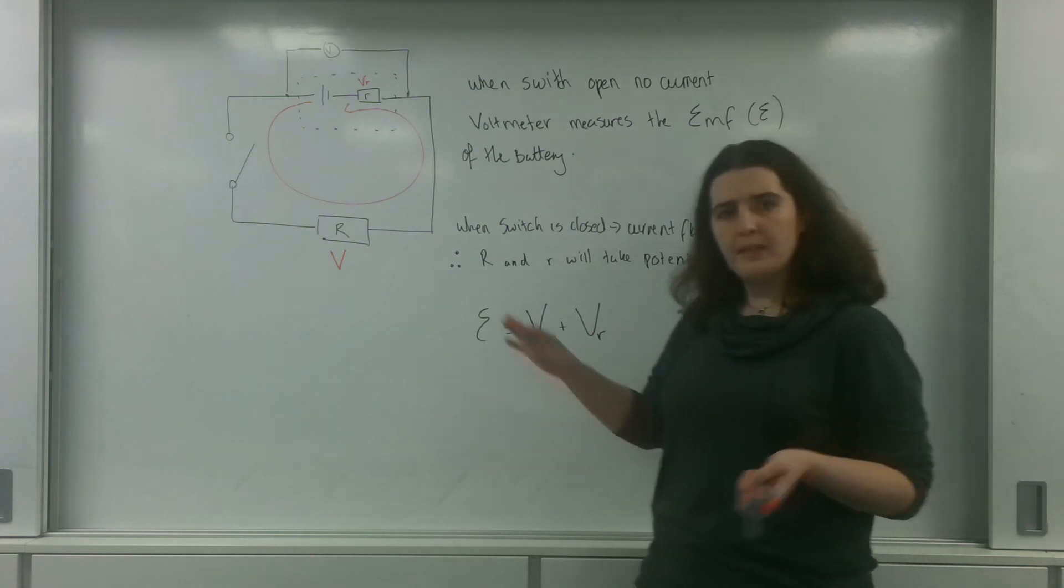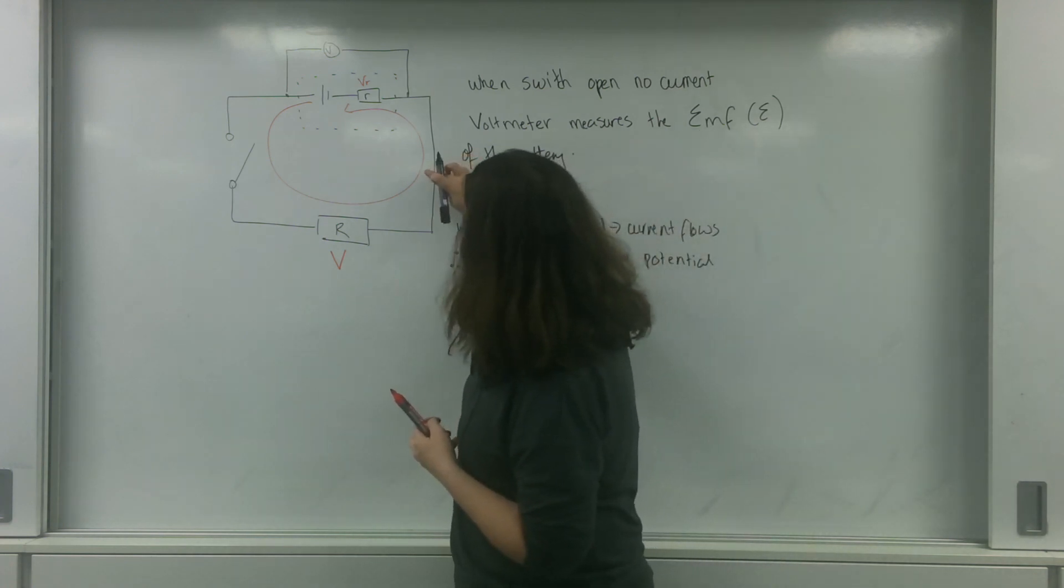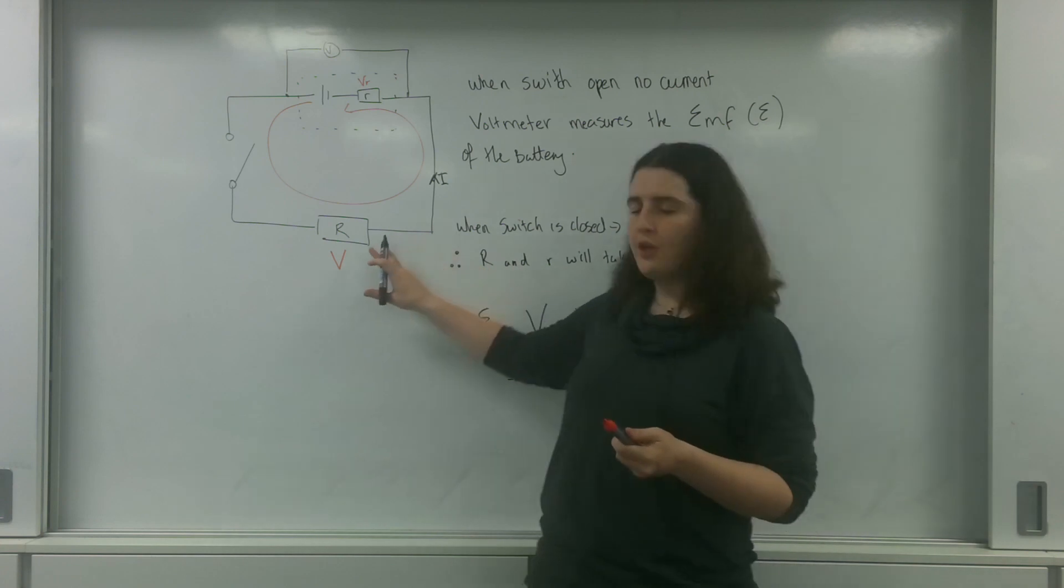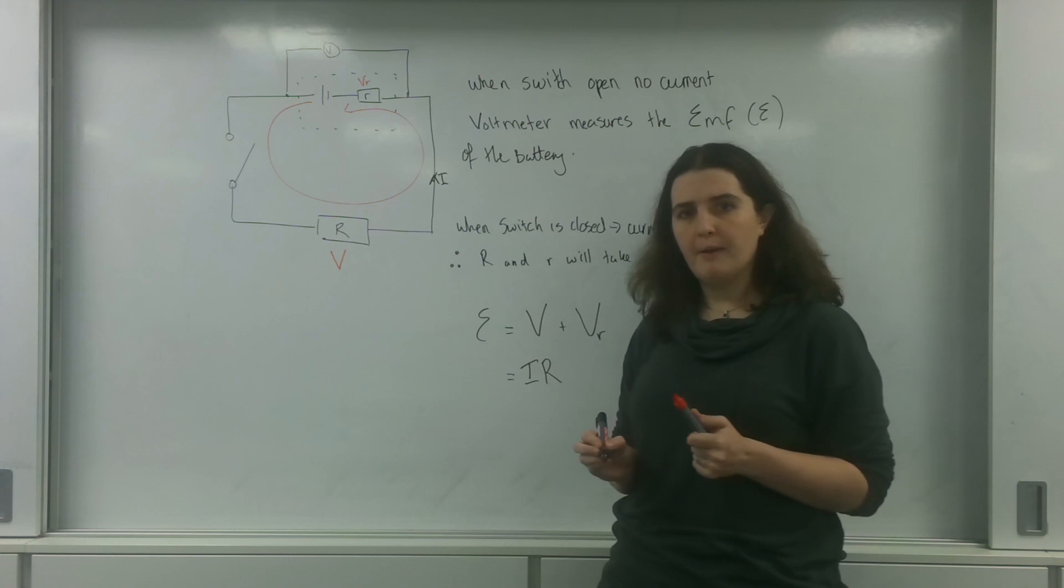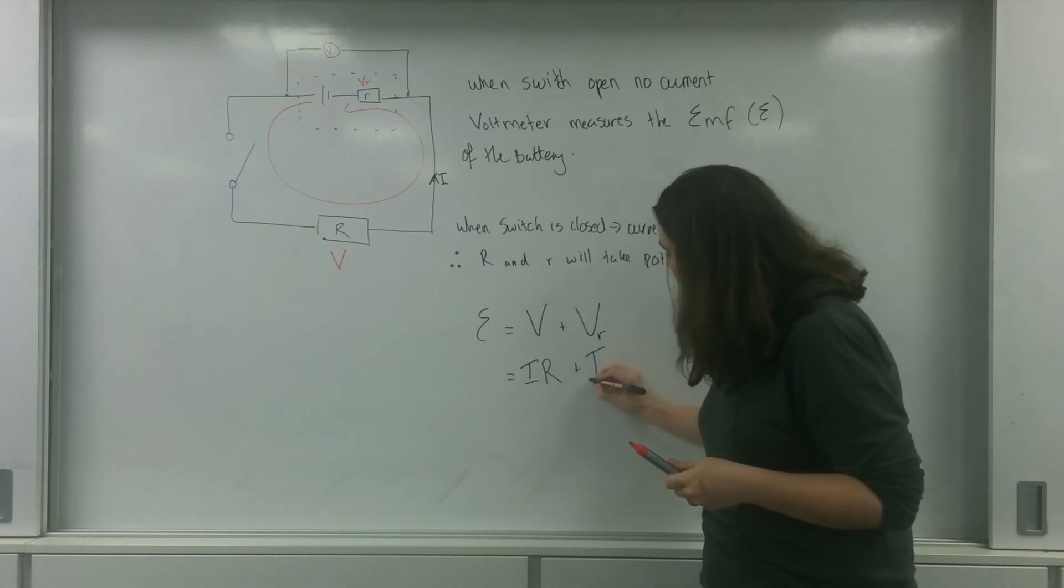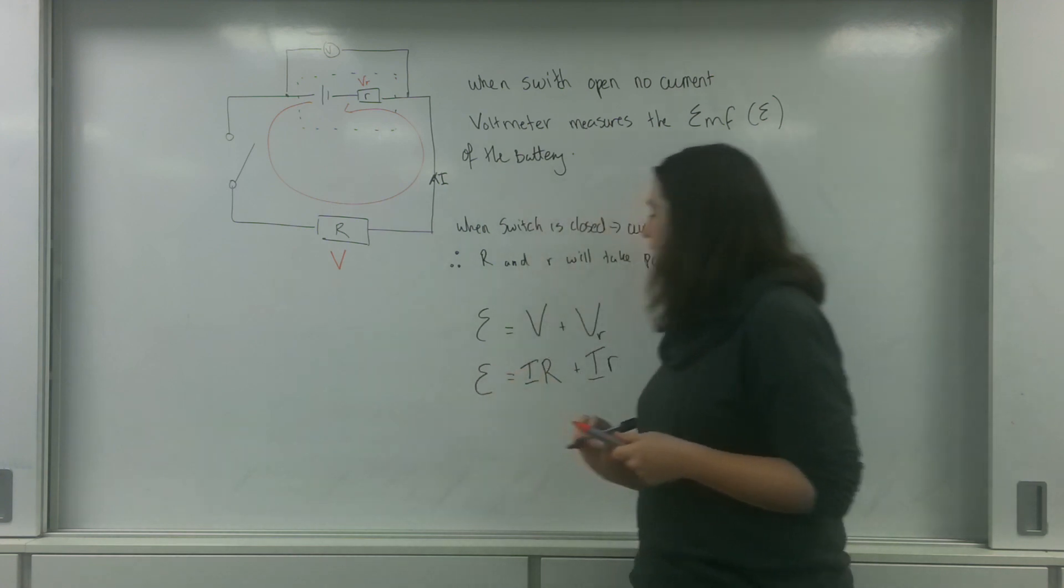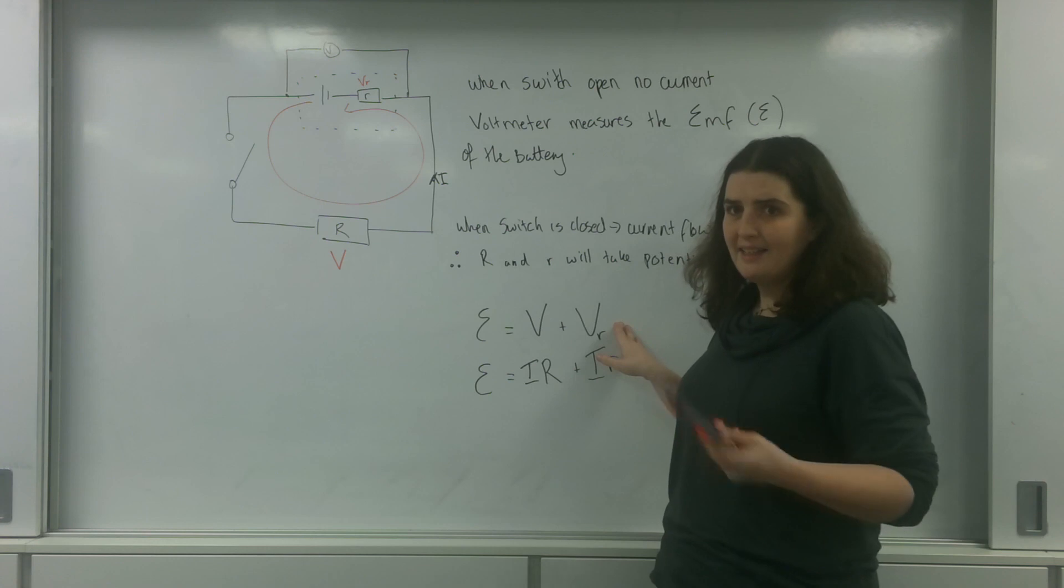Now I have represented this by just a normal series circuit. This has a total current here of I. So if I wanted to find the individual V for the circuit here, it would be I times the R of that circuit. If I wanted to find it for the internal resistance, it would be I times that little resistor. So the EMF is the potential that the whole circuit gets plus the potential that that little resistor is taking away. It's wasting energy.